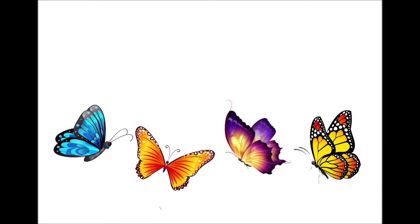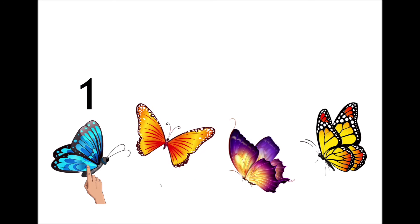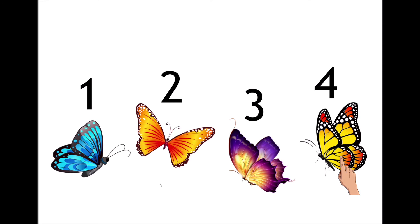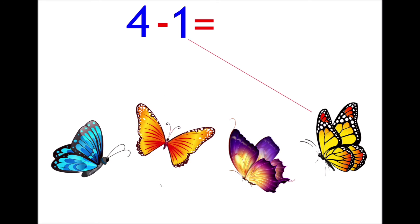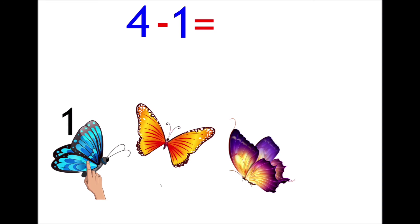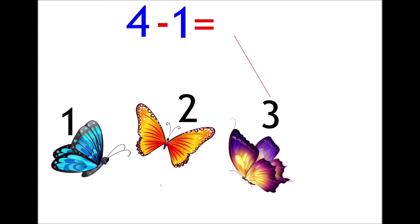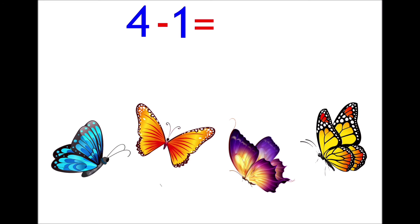Now we have some butterflies. How many butterflies do you see? Let's count: one, two, three, four. There are four butterflies. Now let's try to take one away — minus one. Let's take away one butterfly. So, how many butterflies are left? Let's count: one, two, three. Very good — three! Four minus one equals three.